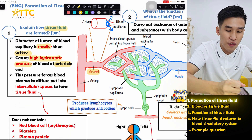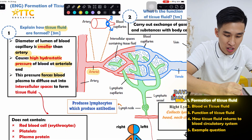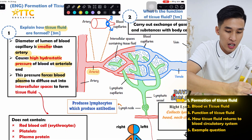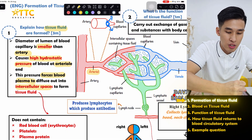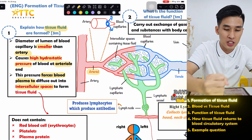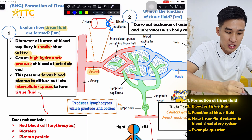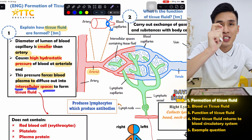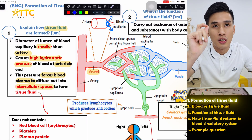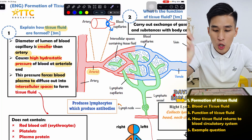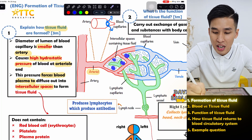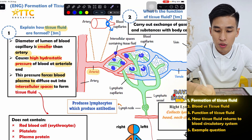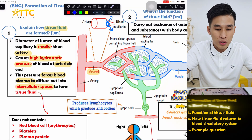This pressure will then force blood plasma out and it will go into the intercellular spaces — the spaces between the cells. Outside your blood capillary, you have cells, and that's called the intercellular spaces. That's where your tissue fluid will go into.